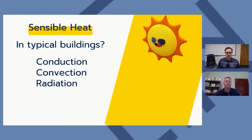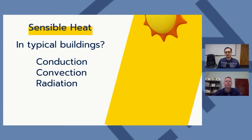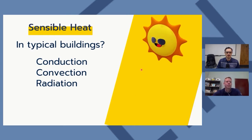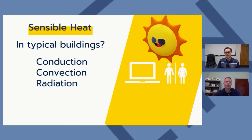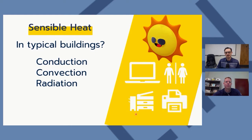In typical buildings, sensible heat sources include the sun shining on the roof, walls, and windows. Inside the building, computers, people, copiers, printers — anything plugged in and on — gives off some sensible heat. Lights are also a big contributor to sensible heat loads.